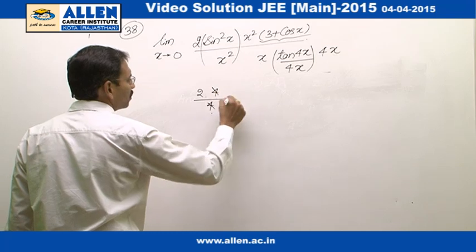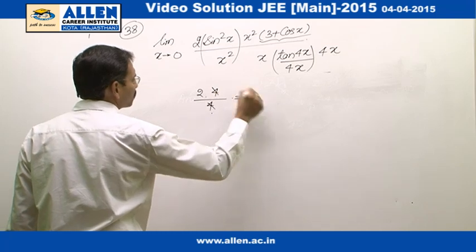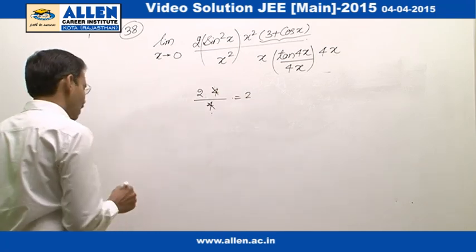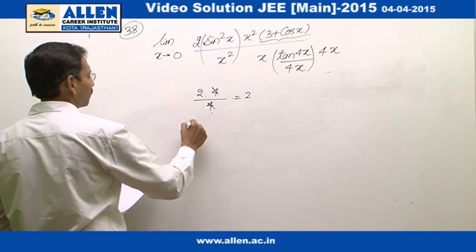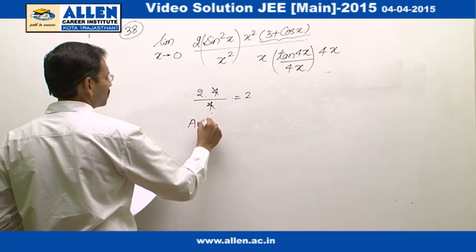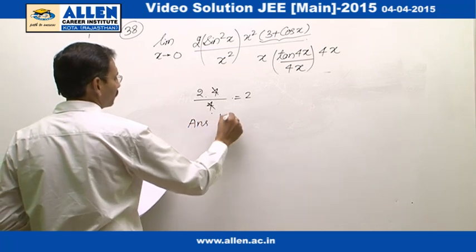What is left is 2 times 4 upon 2 times 4 upon 4, so the limit equals 2. The right option is 1, so the answer is 1.